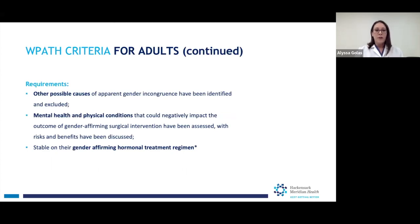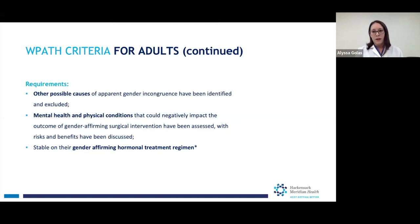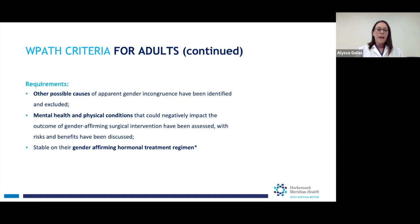Other possible causes of gender incongruence have to be identified and addressed. For example, if a person is taking hallucinogenic drugs and one of the effects is that they think they are transgender — and it's just a result of the medication — that person would not meet criteria for getting treatment. Additionally, their medical and mental health conditions that could affect surgery, things like diabetes, asthma, and depression, have to be discussed and addressed. Basically, you want to be as healthy as possible before having surgery. For those patients who are taking gender-affirming hormones, which is not everybody, you have to be stable on your treatment regimen to be a candidate for surgery.